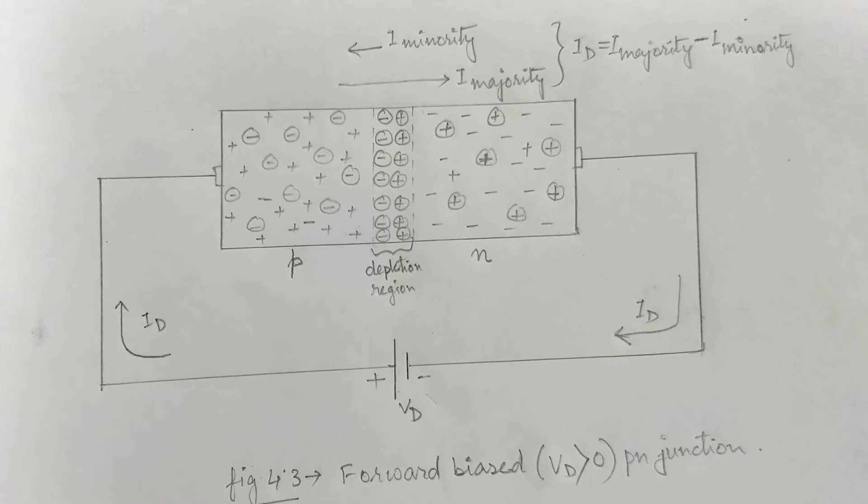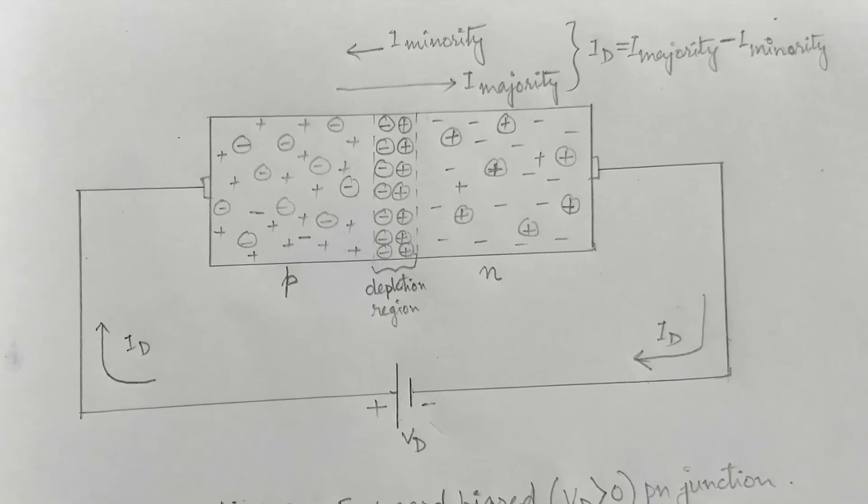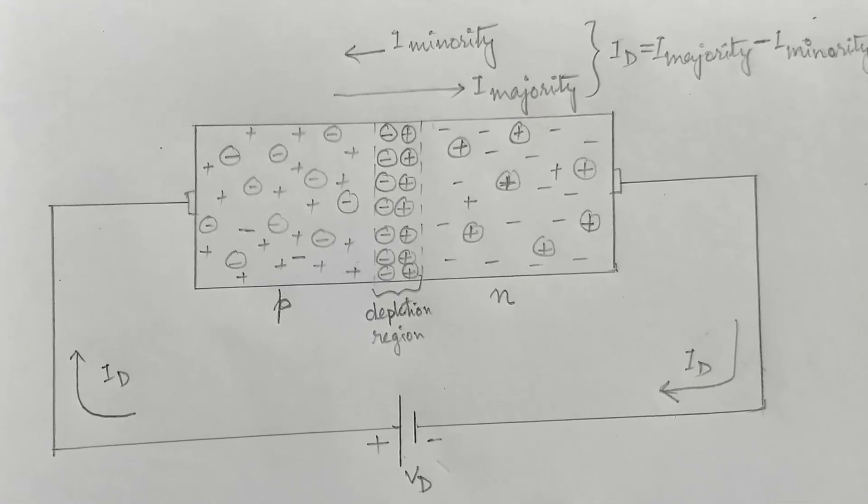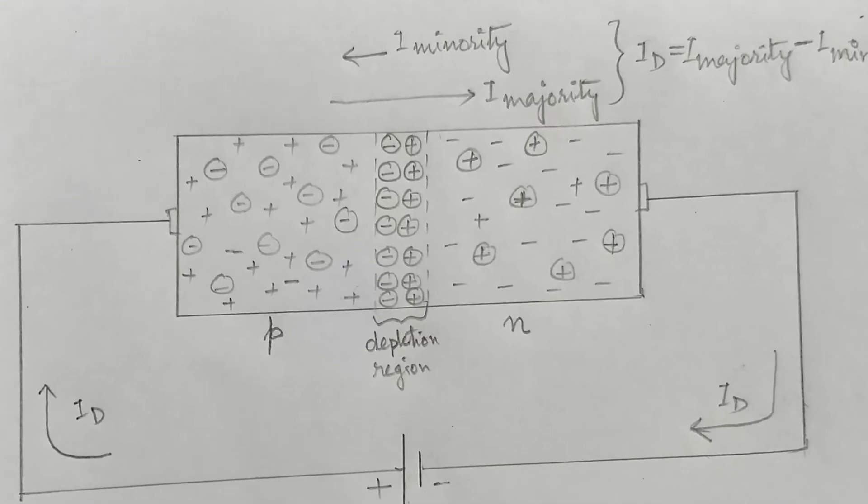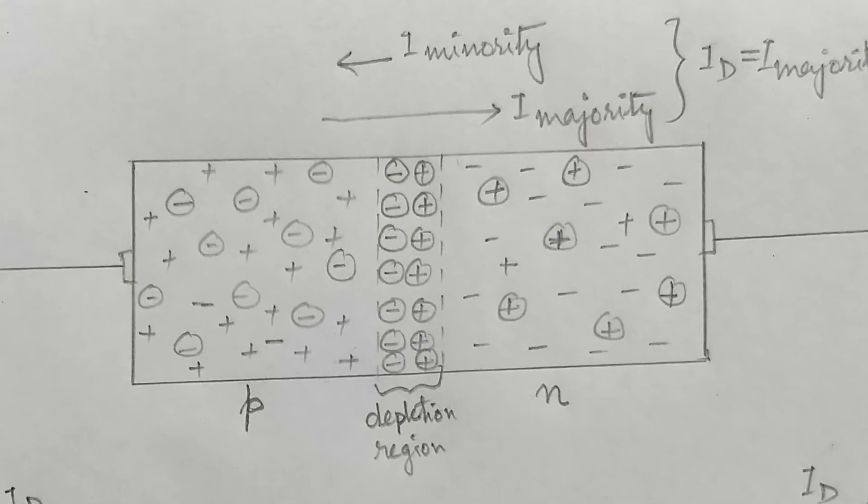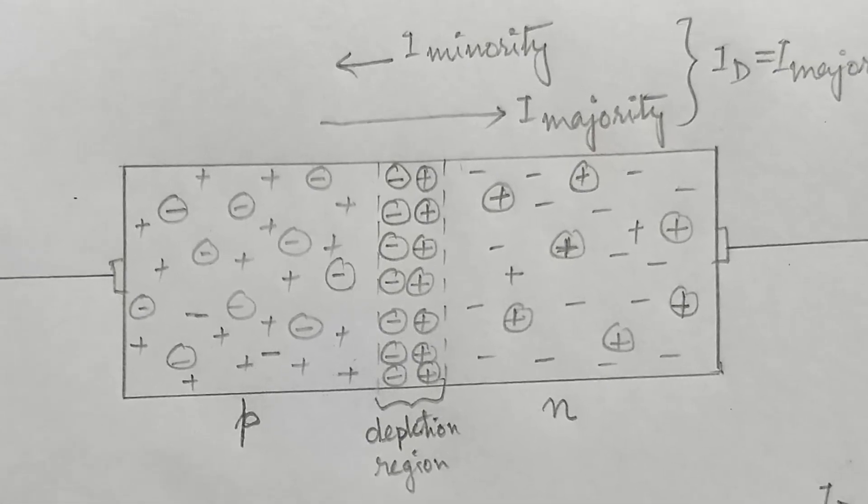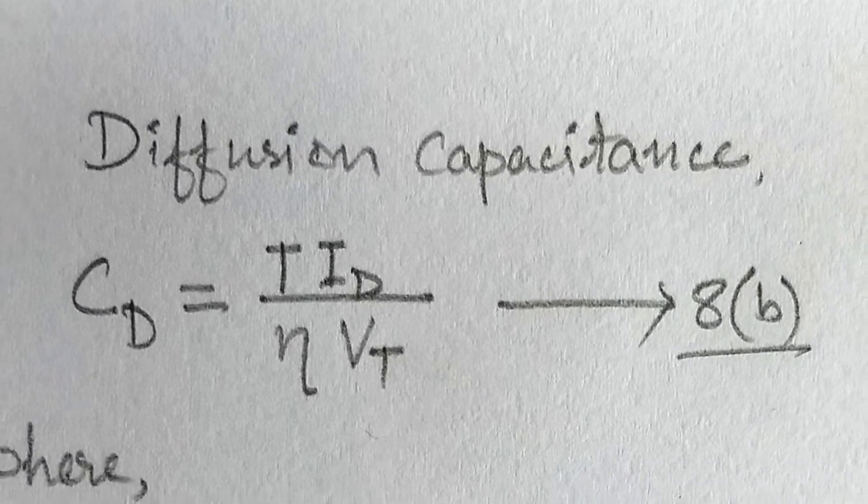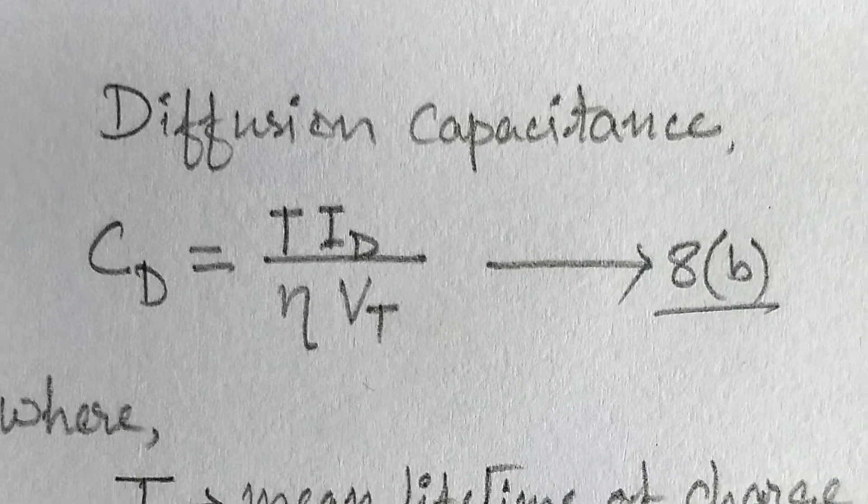In the forward bias case, the diffusion capacitance occurs due to the stored minority electrons and holes near the depletion region. So this capacitance is also called as storage capacitance. The formula for diffusion capacitance is given by this equation 8b.